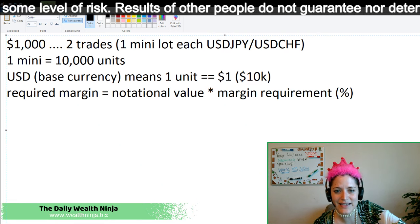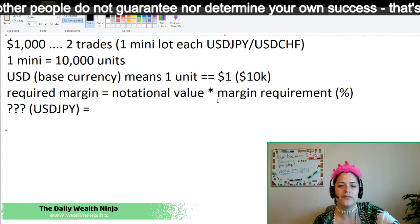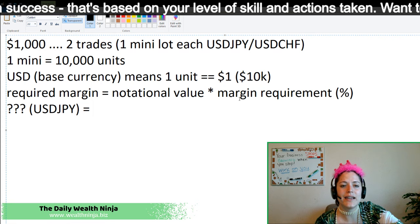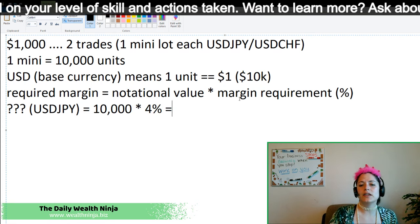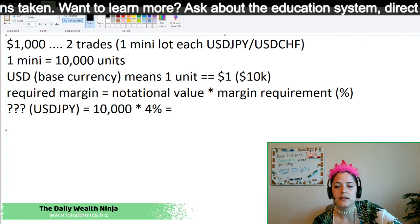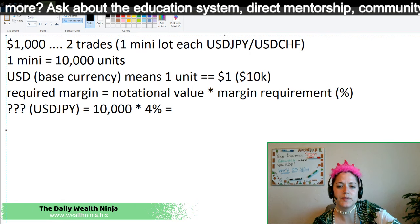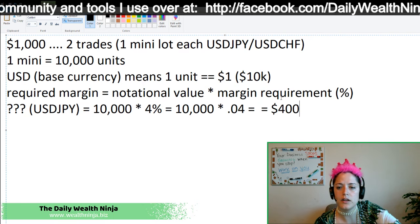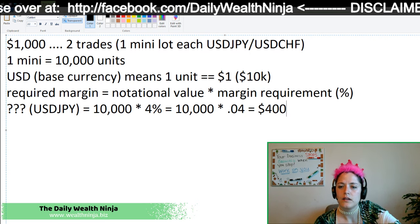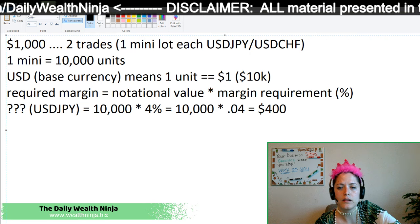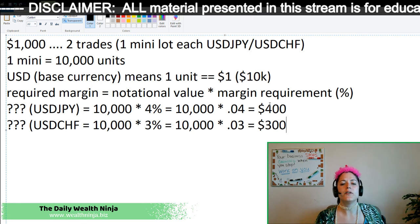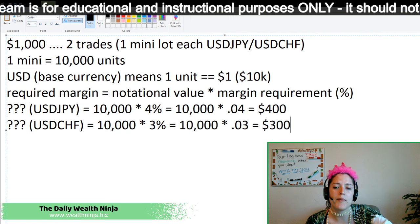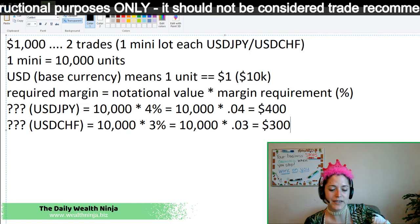So for these examples, let's say that you have your USD/JPY and your margin requirement is 4%. That means your required margin is 10,000 times 0.04, which equals $400. If you use the USD/CHF pair and let's say it was at a 3% margin requirement, then you would need $300 of margin in order to place or keep said trade.